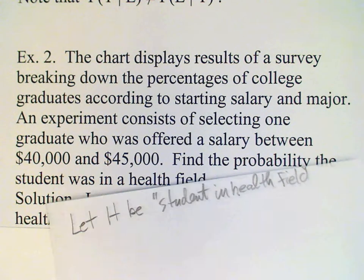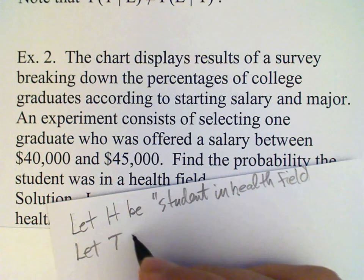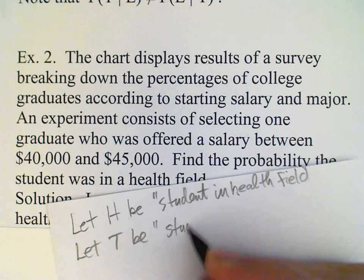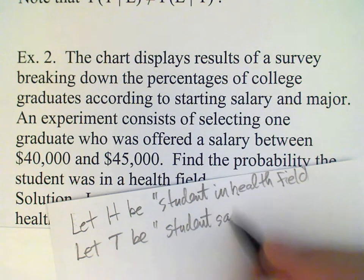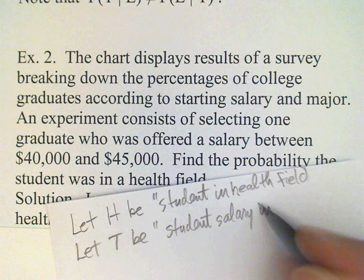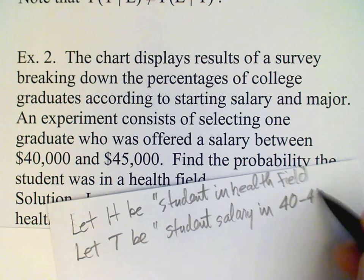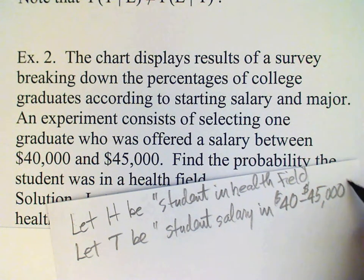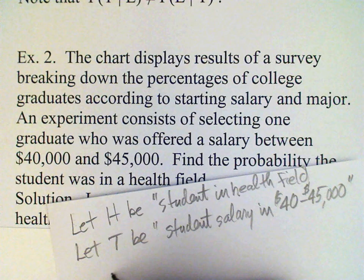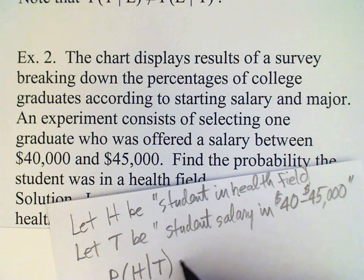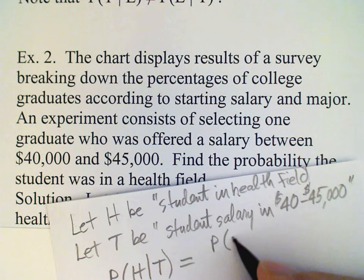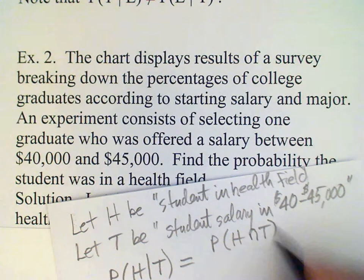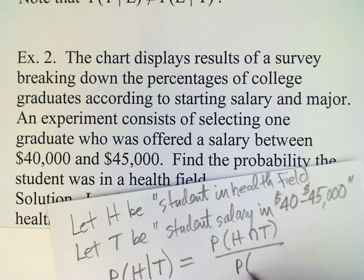We'll let T be 'student salary in the range forty to forty-five thousand dollars.' We know that the student is in that salary range, so what we want is P(H|T), which equals the probability of the intersection H intersect T divided by the probability of T.